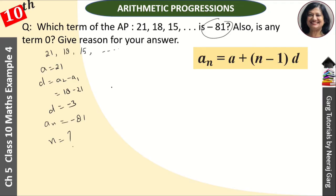We apply the formula. AN was given as minus 81. That equals a which is 21 plus n (which we need to find) minus 1, and d is minus 3. So this becomes minus 81 = 21 minus 21, that equals multiply minus 3n plus 3.